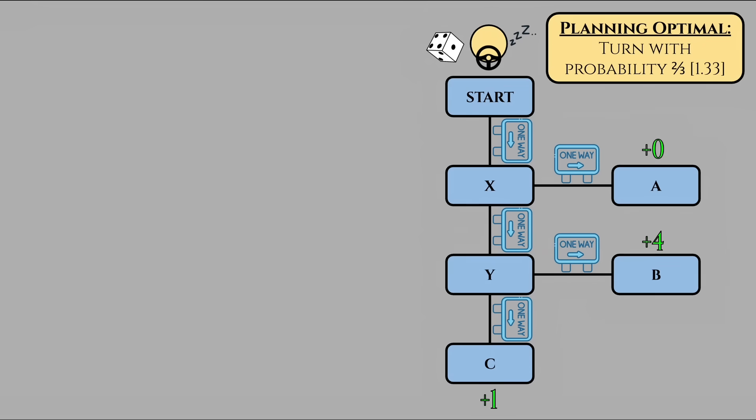This type of puzzle is called an anthropic puzzle, one that refers to self-locating beliefs. That is, beliefs about where or when you, as an observer, find yourself within a broader setup.